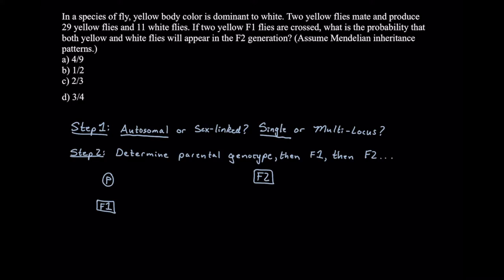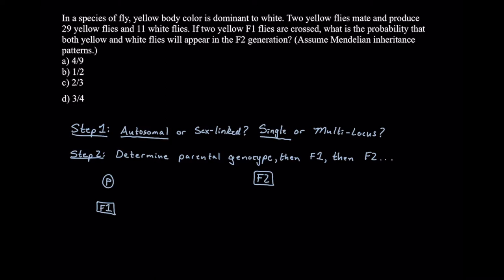Step two: we need to start with our parental genotype, then determine our F1 genotype, and finally our F2 genotype. We're given information somewhat out of order. It says two yellow flies mate and produce 29 yellow flies and 11 white flies. This is rather close to 30 yellow flies to 10 white flies, and that 3 to 1 ratio is something you may have seen before in intro bio or genetics class.